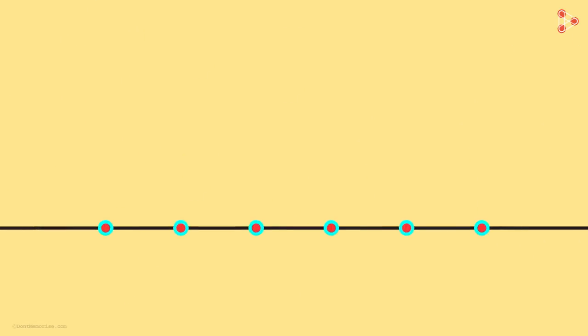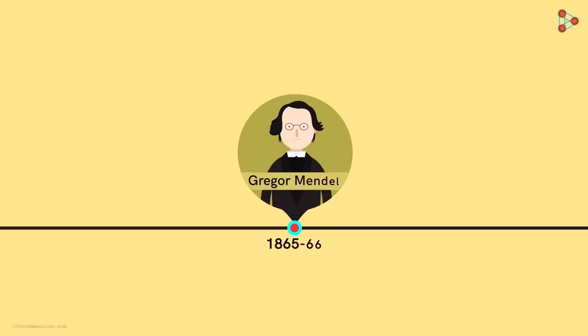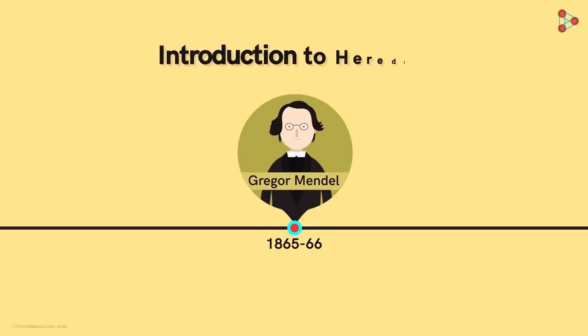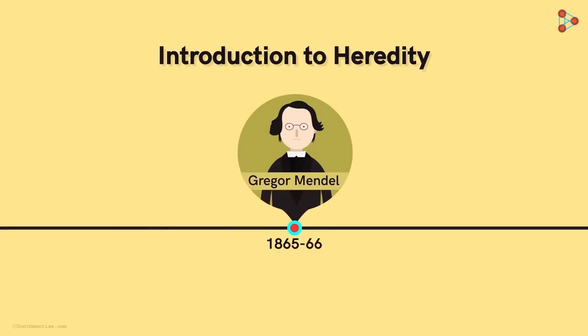Let's find that out by going back in time! Firstly, let's have a look at the milestones in this journey. To begin with, we have the father of genetics, Gregor Mendel, who introduced the concept of heredity to us. He was the first to hypothesise that there are factors which pass from parents to offsprings. This was around mid-1860s. However, his work was largely ignored.